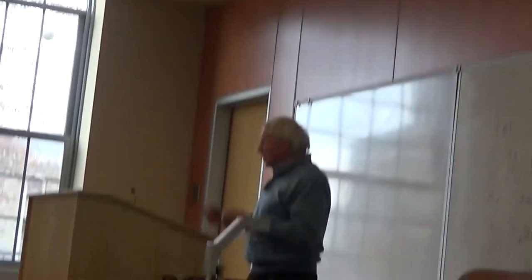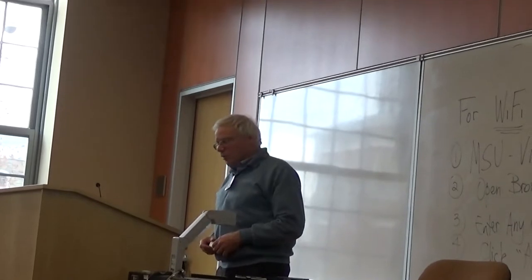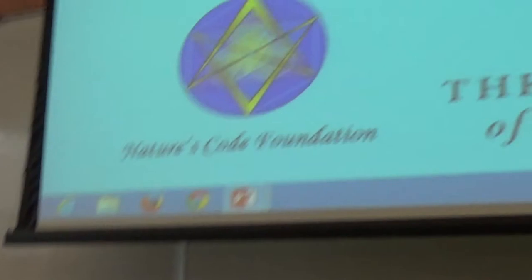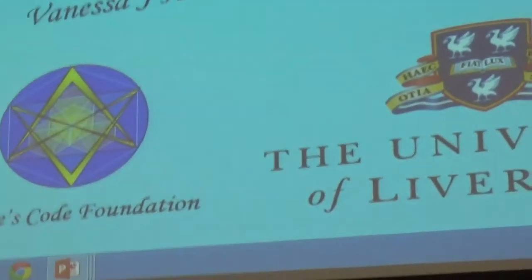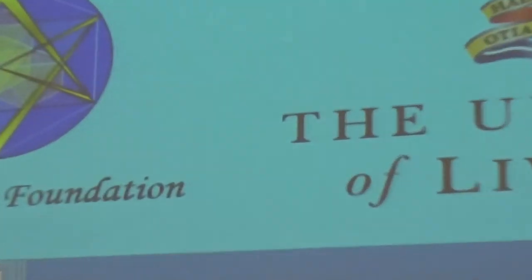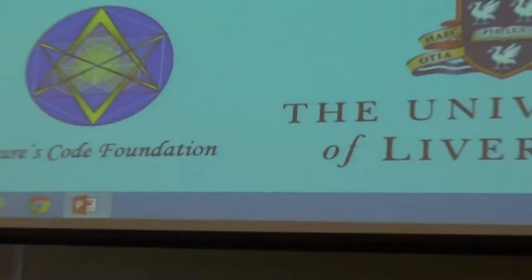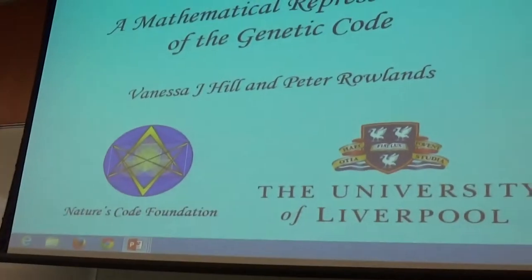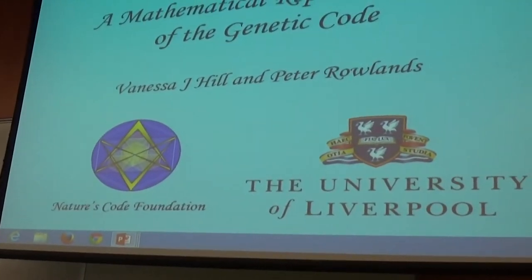This is a joint paper with Vanessa Hill, who, as Richard said, can't be here and would have otherwise presented. It's called Mathematical Representation of the Genetic Code, and this is based on work done over a long period between us. This is just another development in this long period of work.